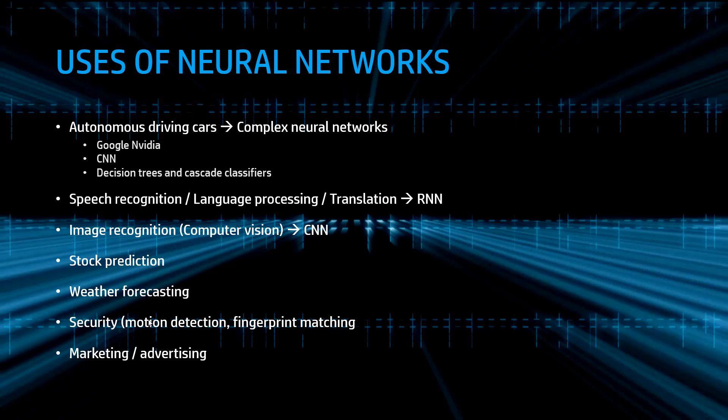It's also used for self-driving cars. For example, Google and NVIDIA are trying to use this technology and apply it to driving cars. They are complex neural networks. For example, they use convolutional neural networks and also many artificial intelligence tools like decision trees and cascade classifiers.